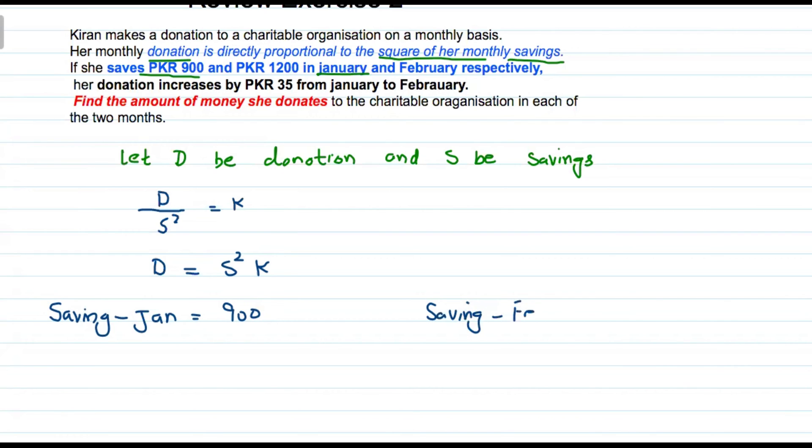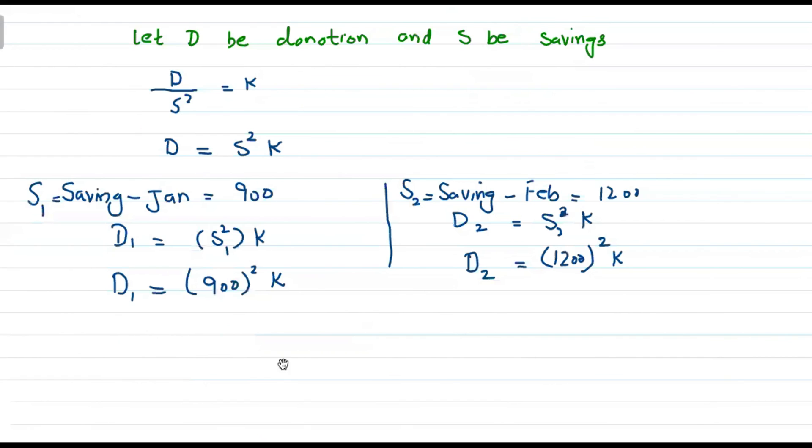S1 saving in January is 900 PKR and S2 saving in February is 1200 PKR. D1 equals S1 square K, so 900 square into K. And the February donation D2 equals S2 square into K. Here S2 is 1200, so 1200 square into K. The donation increases 35 from January to February.